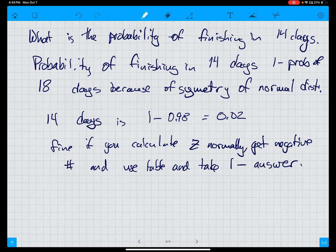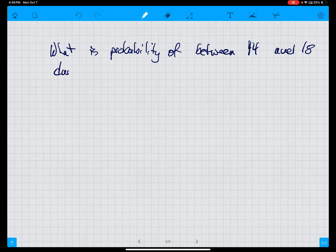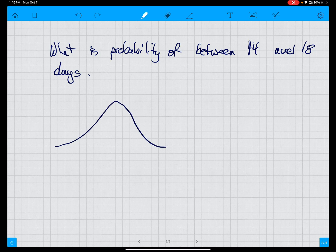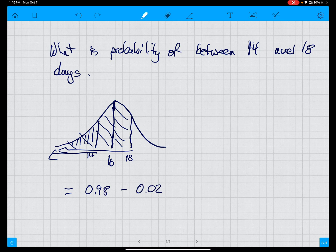And the last question is what is probability of between 14 and 18 days? In that case, we remember the normal distribution. So the probability of between 14 and 18 days is this minus this. So that equals 0.98 minus 0.02 equals 0.96 or 96% probability of finishing between 14 and 18 days.